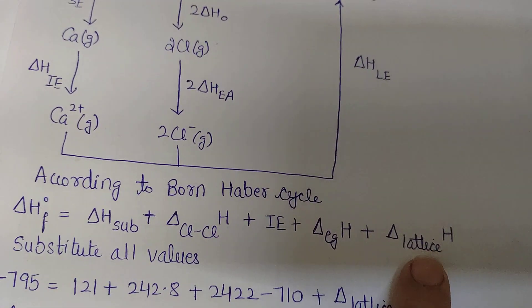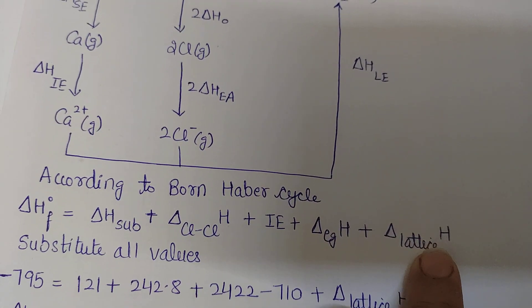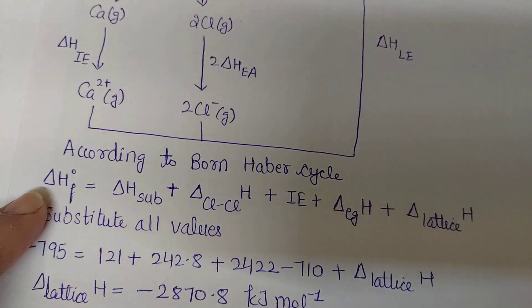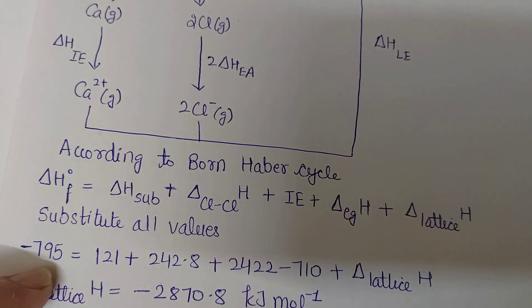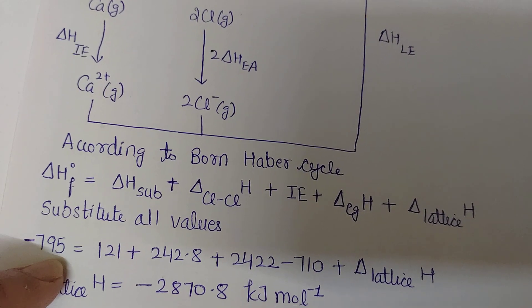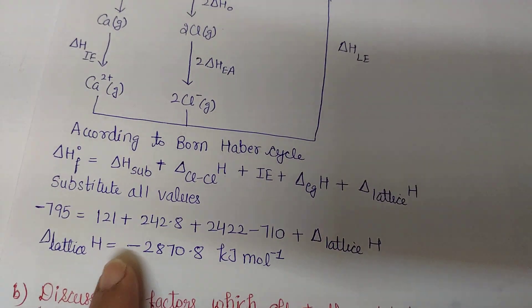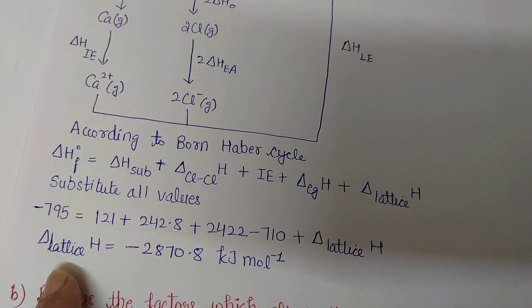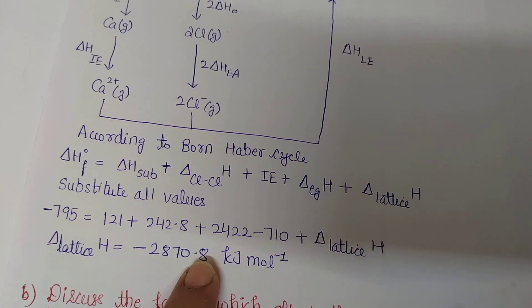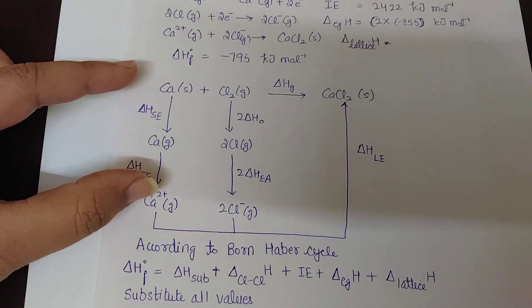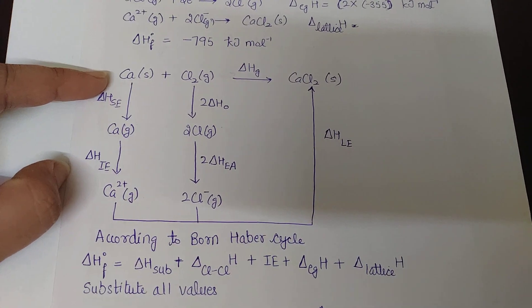We substitute all the values to find the lattice energy. The heat of formation is given as minus 795 kilojoules per mole. By substituting all values and adding or subtracting, we can find the lattice energy.